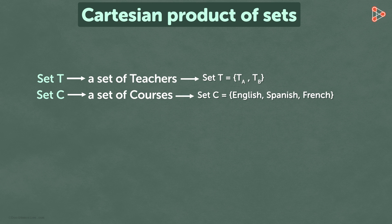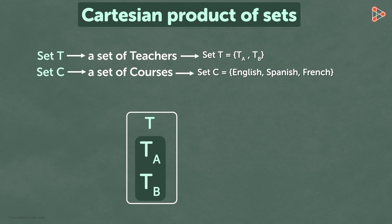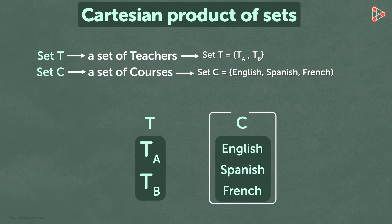Now we want to write all possible ways in which every teacher teaches every language. We can understand this using an arrow diagram. Set T is on the left and set C is on the right.